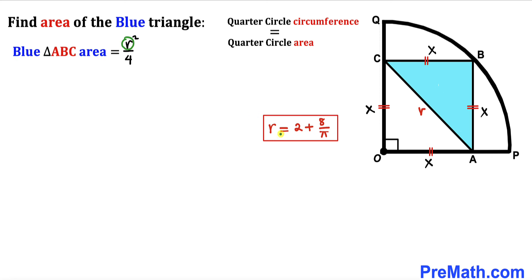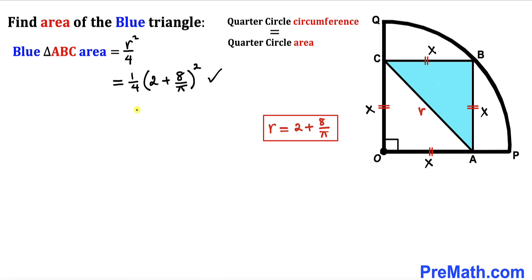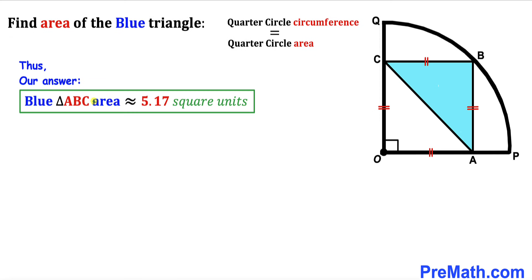With r = 2 + 8/π, we substitute into the area formula: Area = (1/4) × (2 + 8/π)². Simplifying the right-hand side, the area of the blue triangle ABC is approximately equal to 5.17 square units. That's our final answer. Thanks for watching and please subscribe to the channel for more exciting videos.